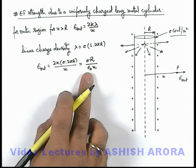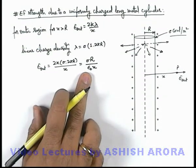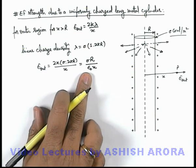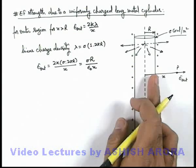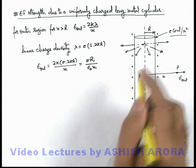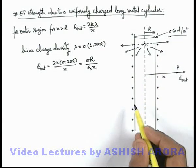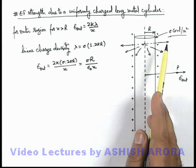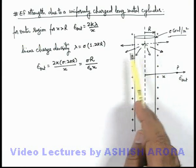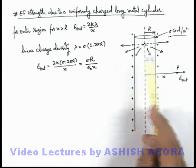Now in this situation, the same result can be applied to a situation when this is a hollow sphere which is uniformly charged with a charge density sigma coulomb per meter square. Because in case of hollow cylinder also, the charge will be there only on the outer surface.